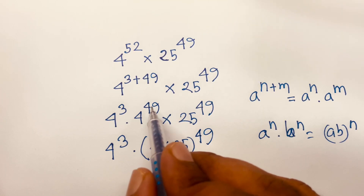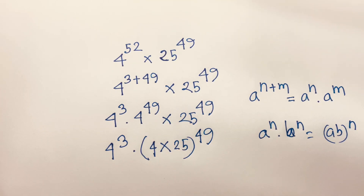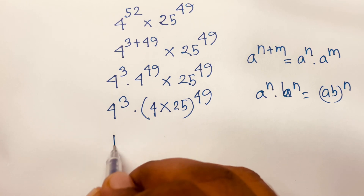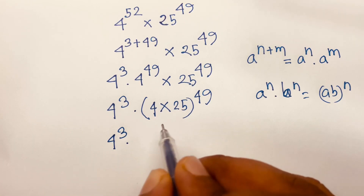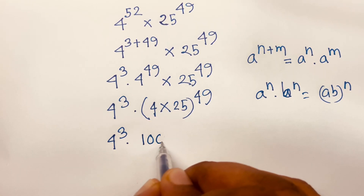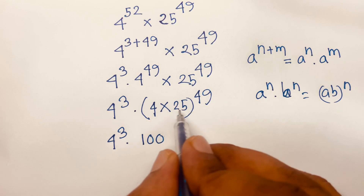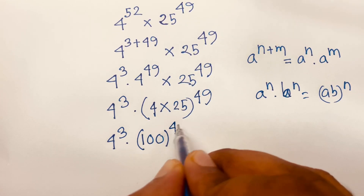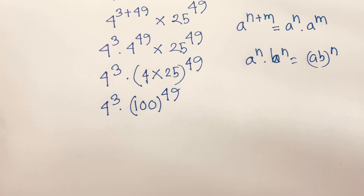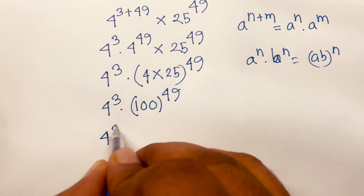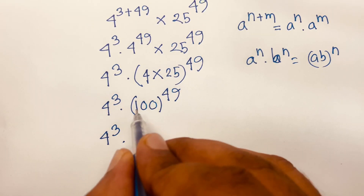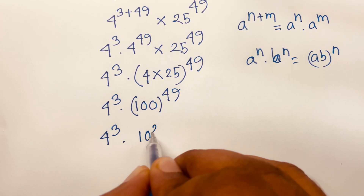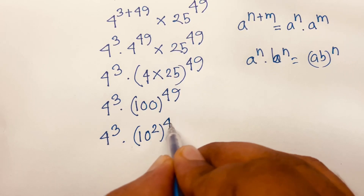Because the exponents are equal, we can combine: 4 to the power 3 times (4 times 25) to the power 49. This simplifies to 4 to the power 3 times (100) to the power 49, and 100 equals 10 to the power 2, giving us 4 cubed times (10 squared) to the power 49.